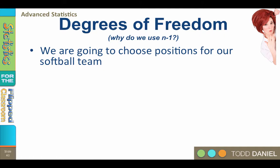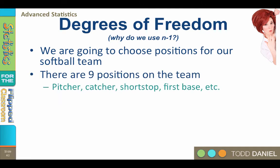Let me illustrate using an example of making choices when choosing positions for a softball team. Degrees of freedom will refer to the number of people who get to make a choice. There are nine positions on the softball team: pitcher, catcher, shortstop, first base, etc. And there are nine of us. We draw straws to see who gets to go first.